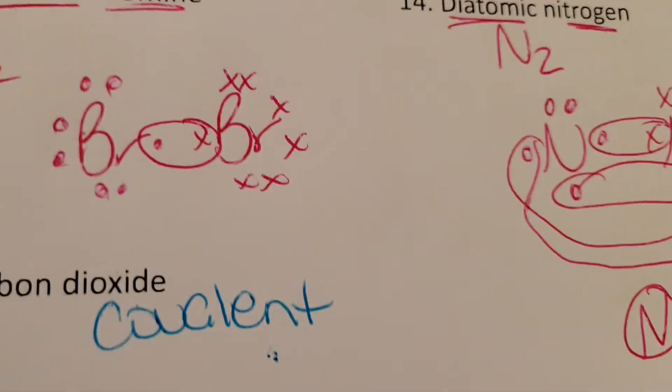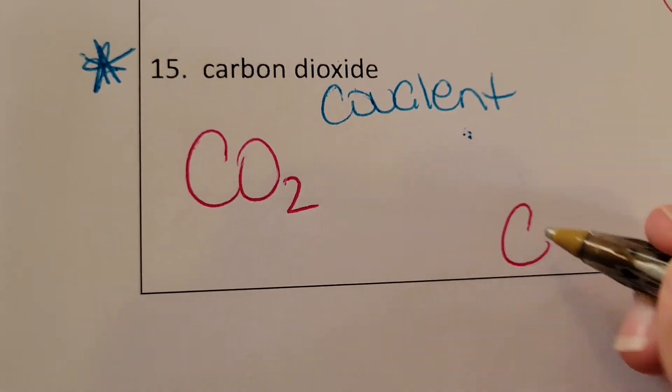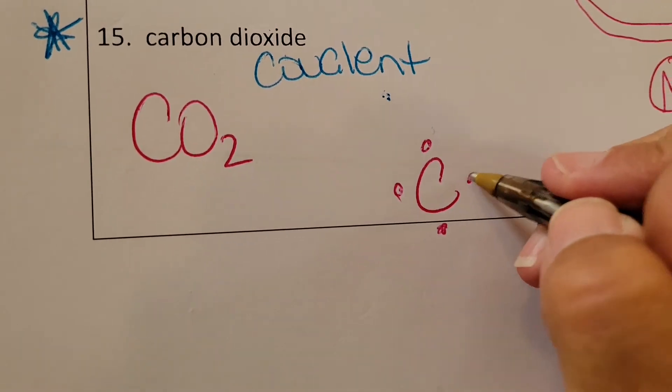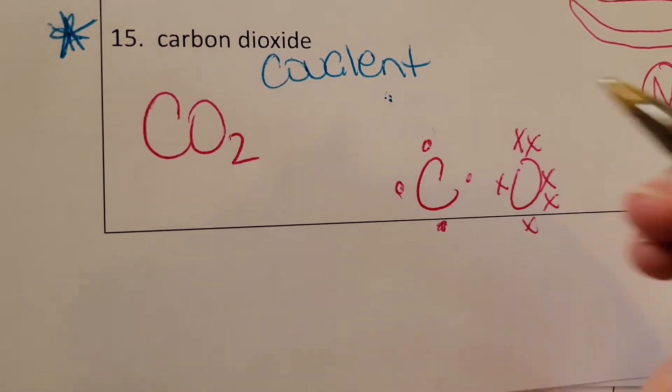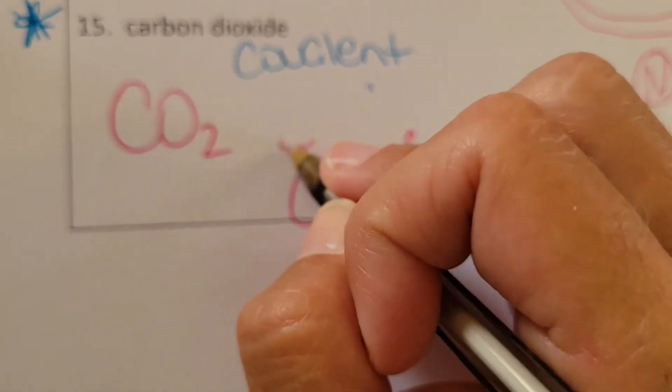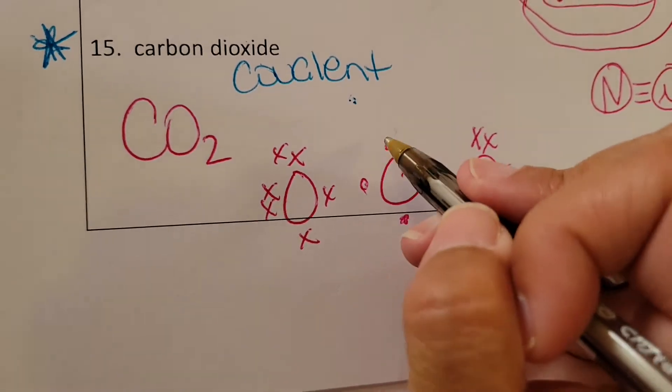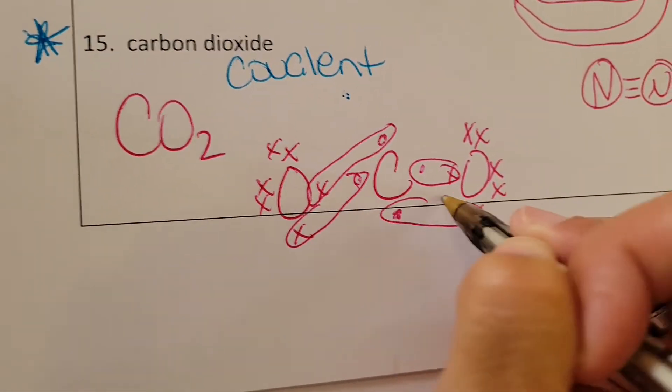And then last one, carbon dioxide. We know the formula is CO2. So kind of an interesting one. We have carbon that has one, two, three, four. We need two oxygens. One, two, three, four, five, six. Another oxygen, one, two, three, four, five, six.